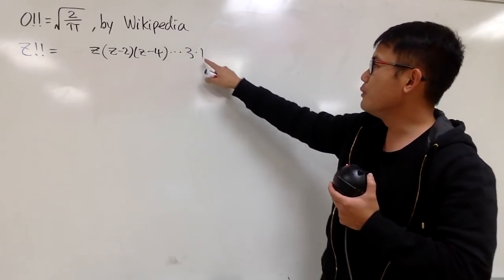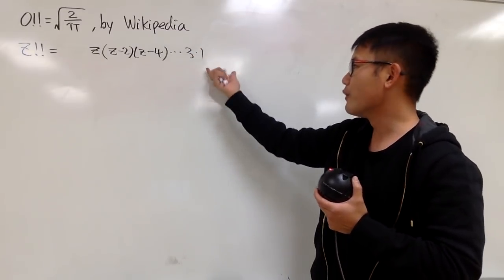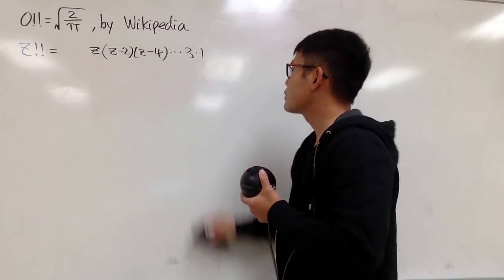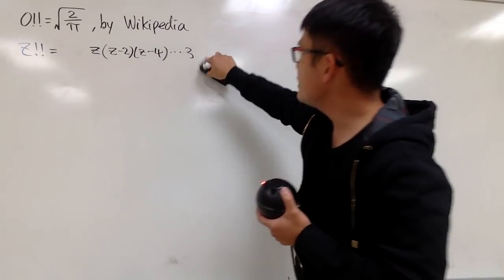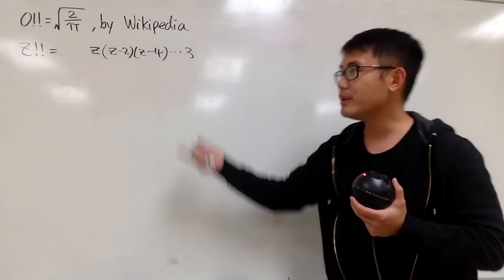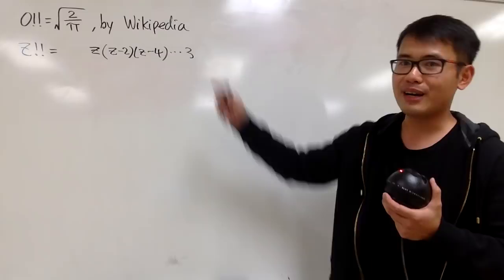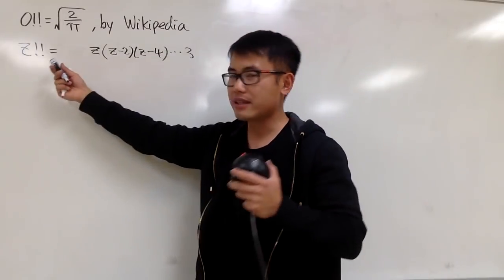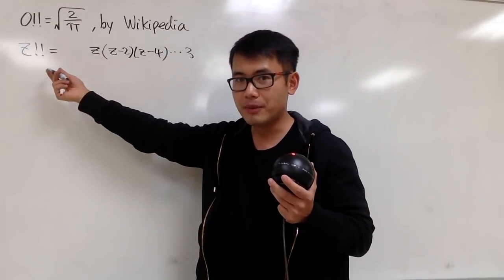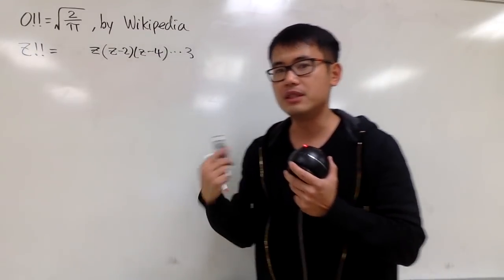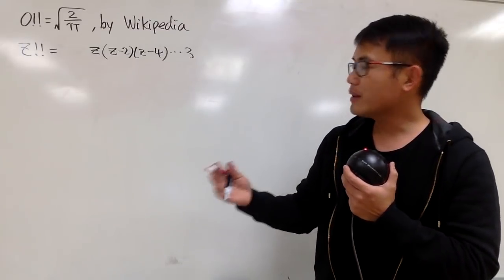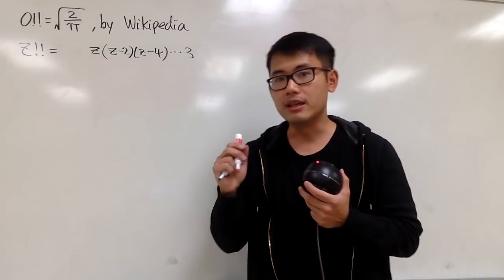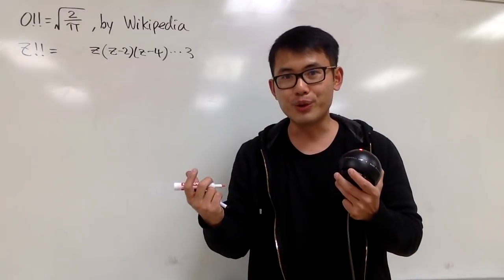Notice that if you multiply by 1, it doesn't really matter, so we can actually erase the 1. You can ask Wikipedia why. Anyway, this is like the definition of Z double factorial if Z is odd. Now let's make a connection — I want to make a connection with the regular factorial.